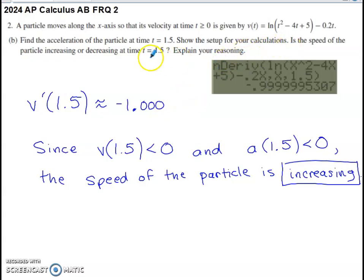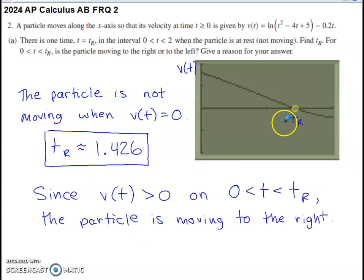Is the speed of the particle increasing or decreasing at this time? When velocity and acceleration are working together, as they are in this case, back in part A, this point is at 1.4.